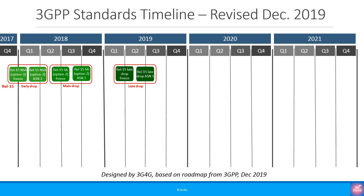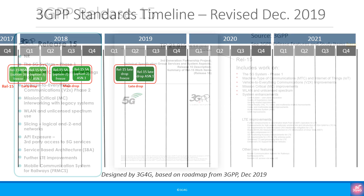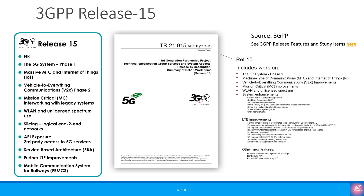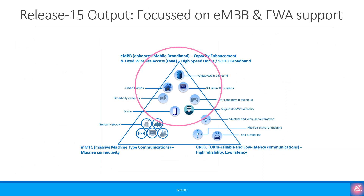All the 5G networks available today are based on 3GPP Release 15. There is a long list of features that came as part of Release 15, but the main ones are listed here. If we put it very simply, 5G Release 15 was focused on Enhanced Mobile Broadband and Fixed Wireless Access — FWA.